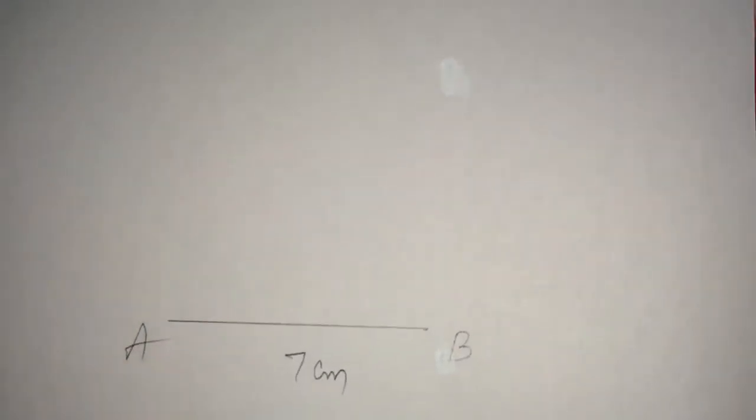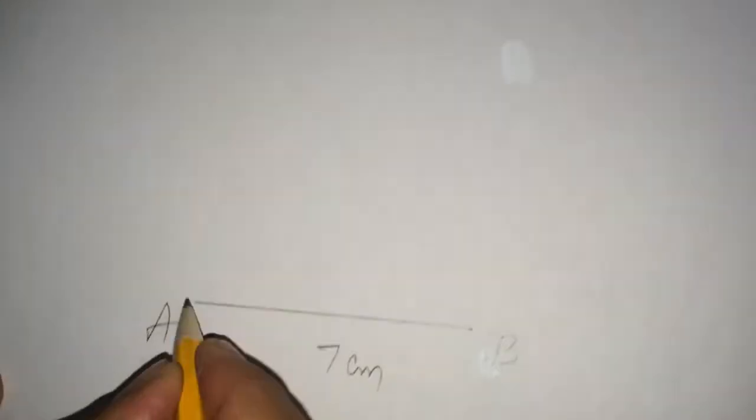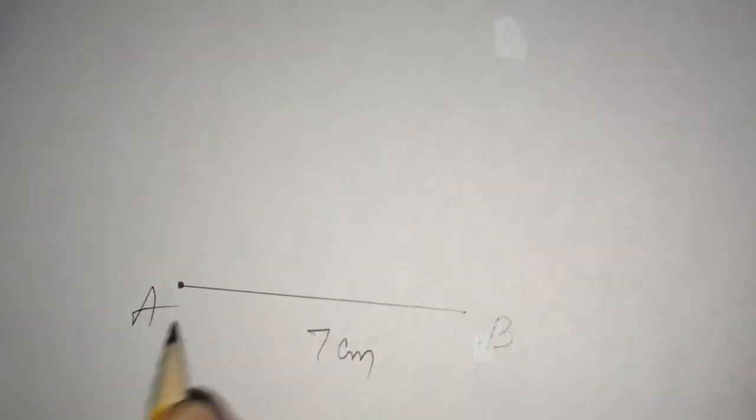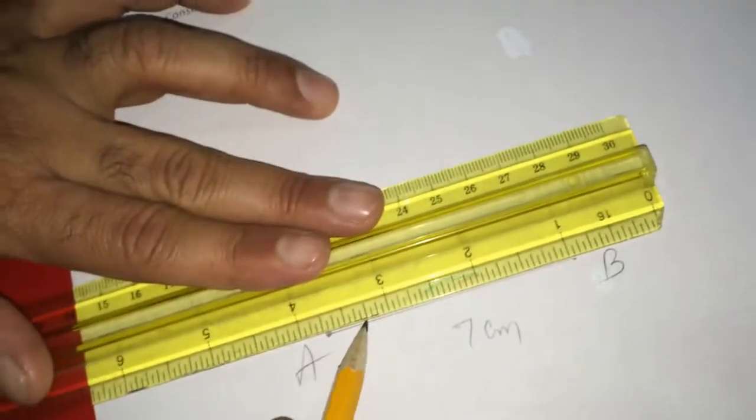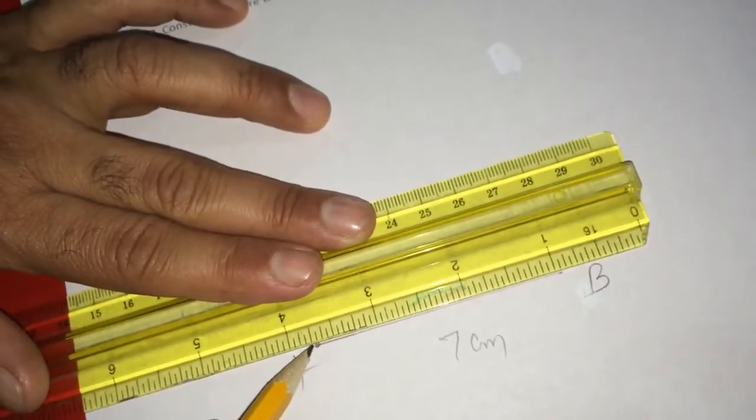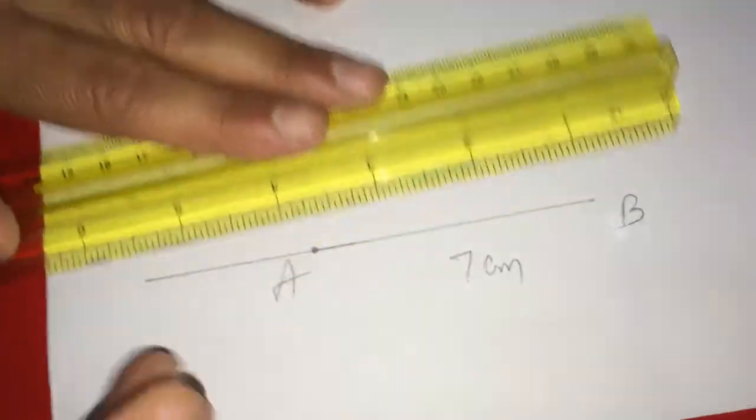Then, you have to locate this A carefully and produce this AB a little bit. Though it is 7 centimeters, you have to produce a little bit. You extend this line a little bit like this.